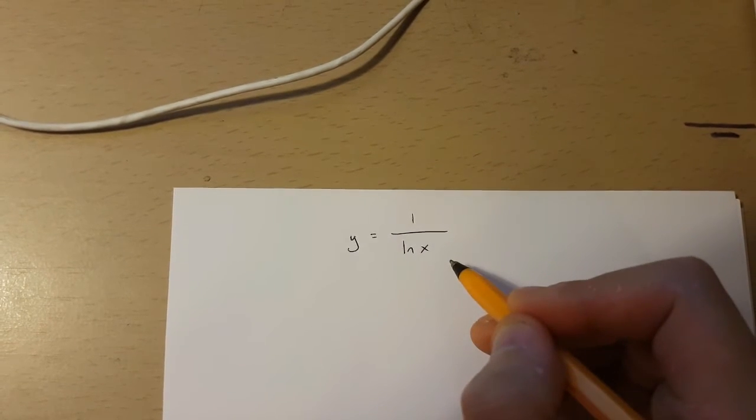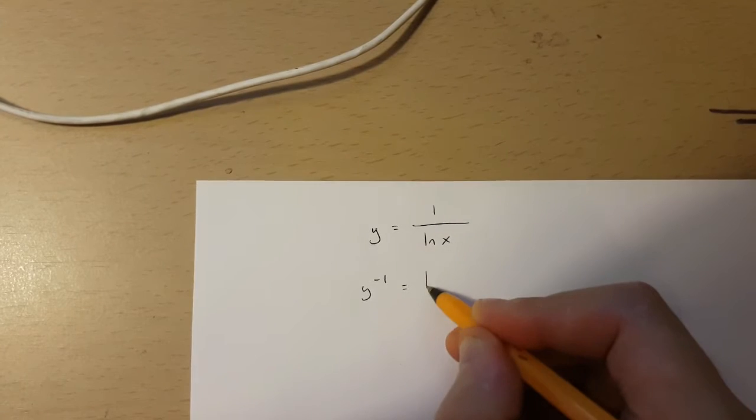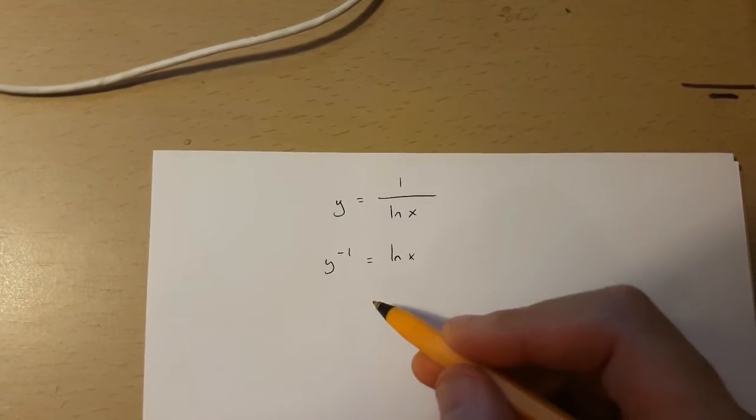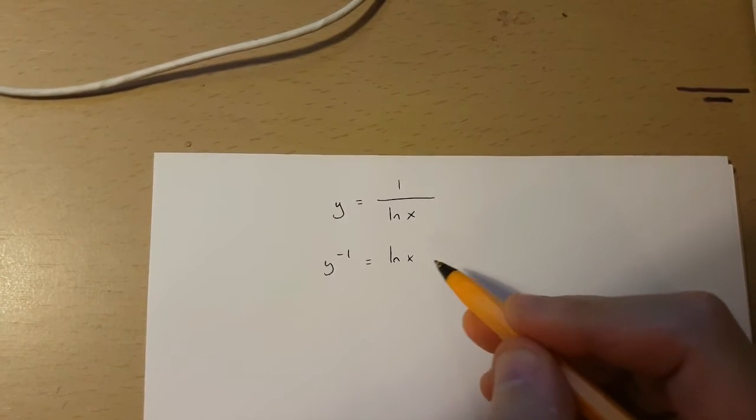The first thing I'm going to do is take the inverse of both sides of this equation. If I do this, I get y to the power of minus 1 equals ln x.